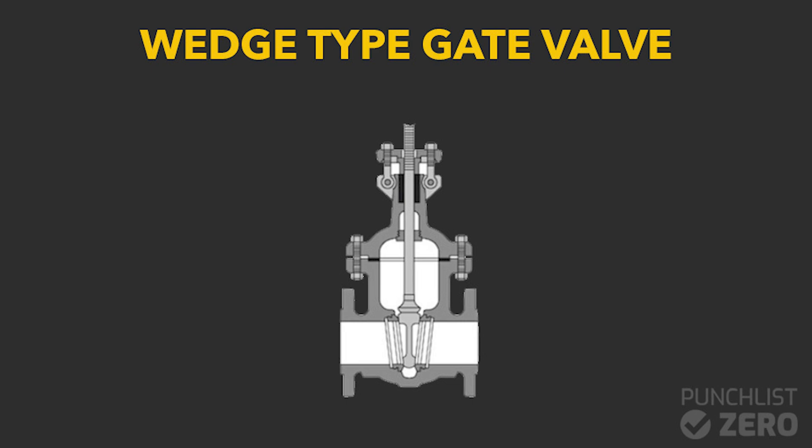The wedge type consists of two inclined seats in the shape of a wedge, and they are usually used in high flow or turbulent applications like steam service. Seating pressure on both sides makes the wedge type gate effective for low pressure applications as well. Wedge material can be solid, flexible, or split.